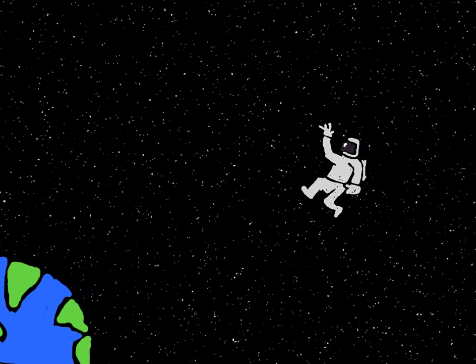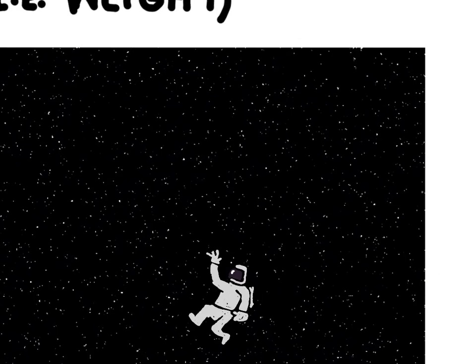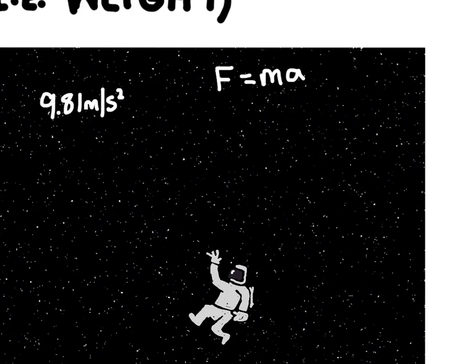Well, weight is literally the force of gravity acting on an object. And just like any force, weight can be calculated with the equation F equals ma. Now a is a special constant, it's the acceleration due to gravity. And this is always equal to 9.81 meters per second squared when an object is on the surface of the earth.